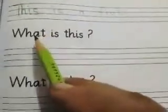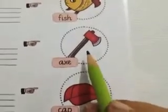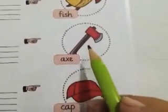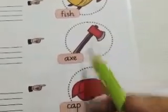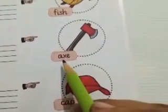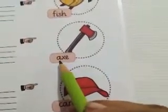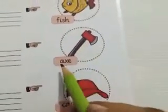The third question is: What is this? Do we use 'a' or 'an'? We use 'an' — this is an x. Why 'an'? Because x begins with a vowel sound. So we write 'an'. This is an x.